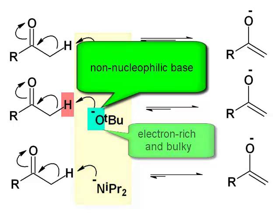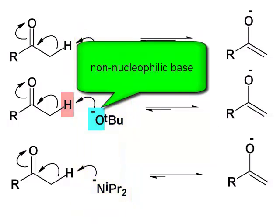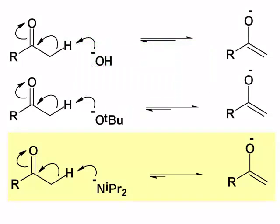So there's a general strategy to try to influence the equilibrium with enolates. You want a more reactive base, but you've got to at the same time cut down the nucleophilicity of that base. Now let's look at the third example.